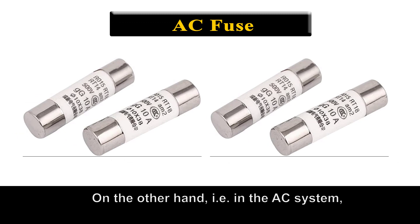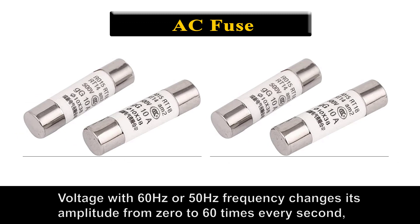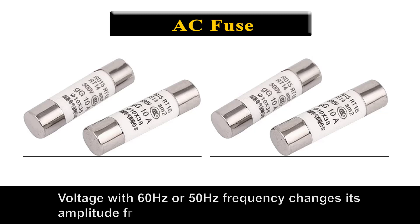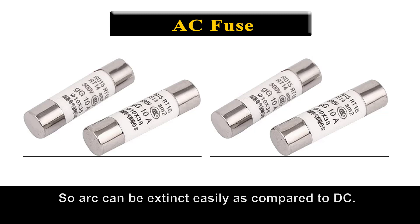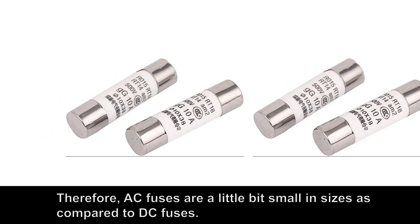On the other hand, in the AC system, voltage with 60Hz or 50Hz frequency changes its amplitude from 0 to 60 times every second. So the arc can be extinguished easily as compared to DC. Therefore, AC fuses are a little bit smaller in size as compared to DC fuses.